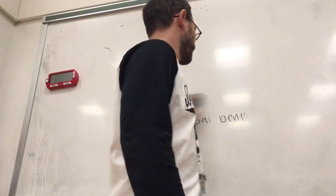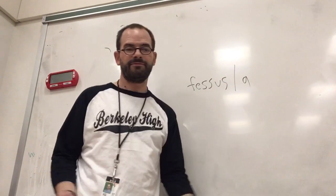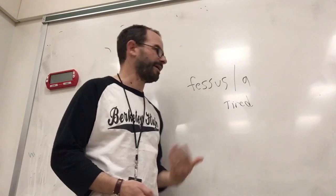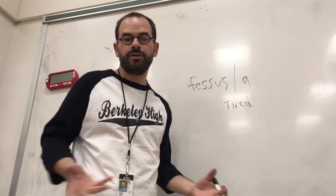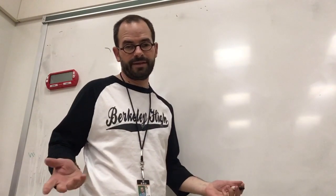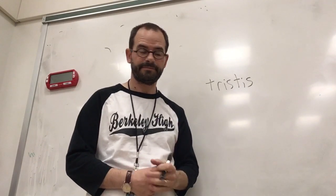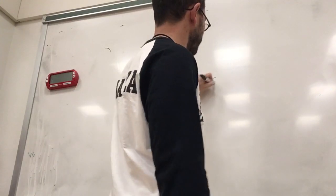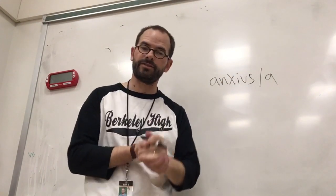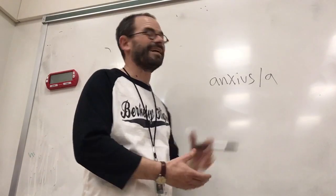Here are some other ways to talk about your state of mind or how you're doing. You might say 'fessus sum' or 'fessa sum,' meaning 'I am tired' — 'fessa sum hodie.' You could also say 'tristis sum' — I'm sad. Or 'anxius sum' / 'anxia sum' — sometimes we're nervous or anxious, especially if you've come to school and have a big test or presentation. So: 'Salve. Ut vales?' — 'Anxius sum.'